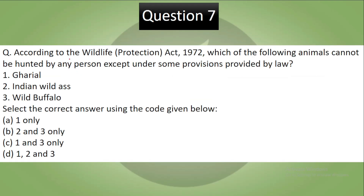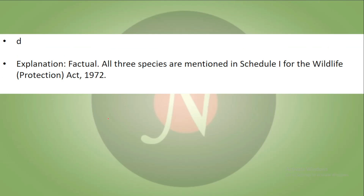Question 7: According to the Wildlife Protection Act of 1972, which of the following animals cannot be hunted by any person except under some provisions provided by law? The options are: Gharial, Indian wild ass or wild buffalo. Select the correct answer using the codes given below. Pause the video and try to answer. Your correct answer is D. It is a factual question — all three species are mentioned in Schedule 1 of the Wildlife Protection Act of 1972.